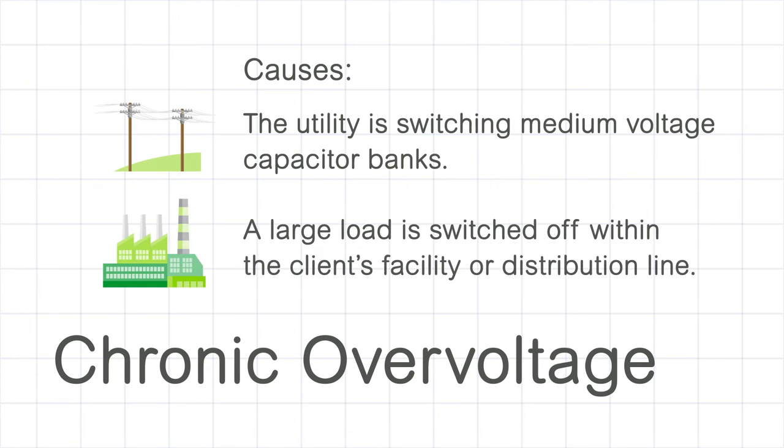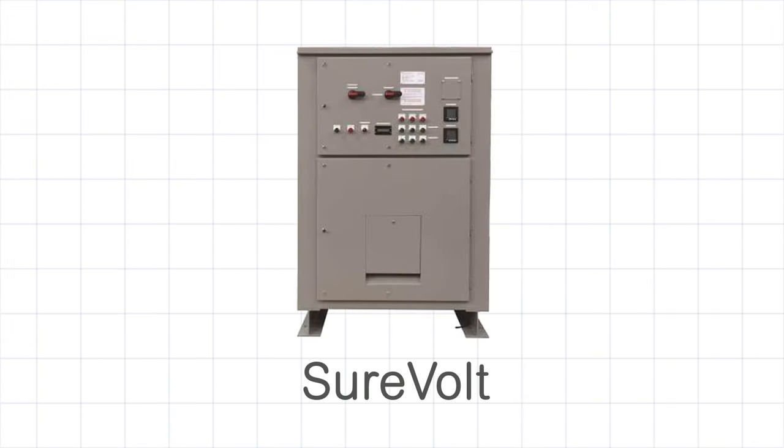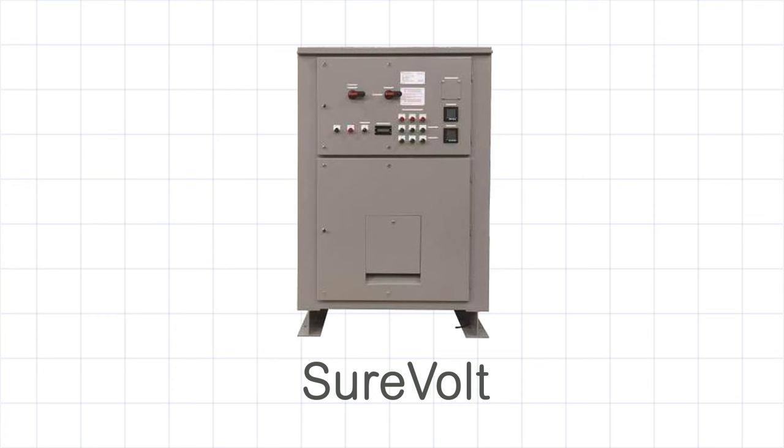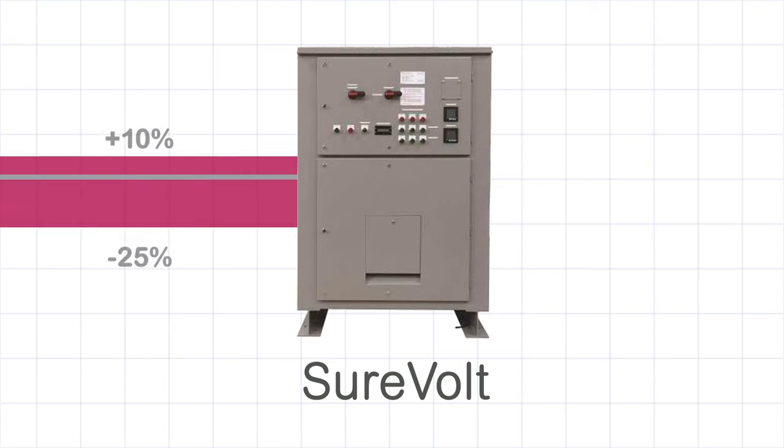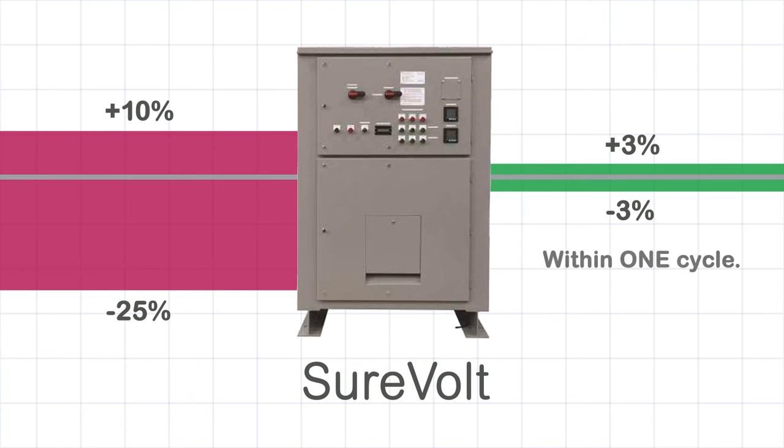A large load is switched off within the client's facility or the medium voltage distribution line. The SureVolt automatic voltage regulator can take a voltage input ranging from plus 10% to minus 25% and regulate the voltage supply to plus or minus 3% within one cycle, making it an ideal solution for chronic voltage issues.